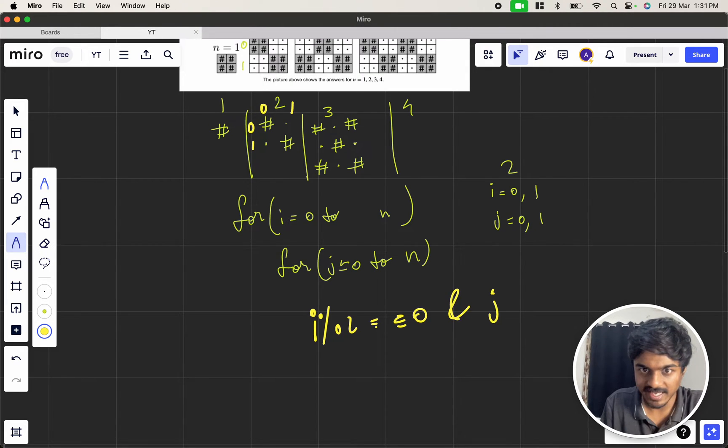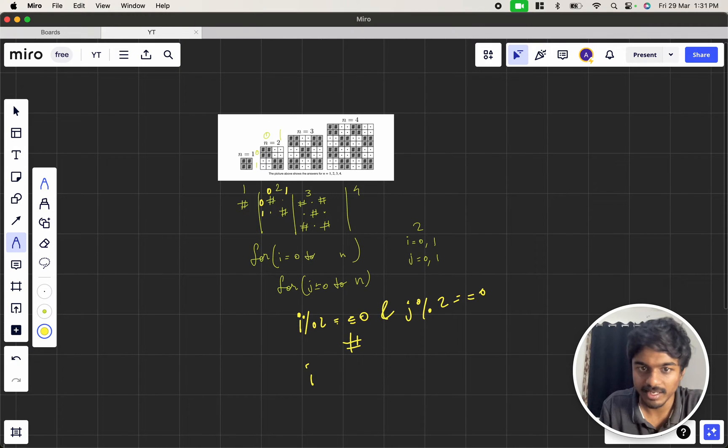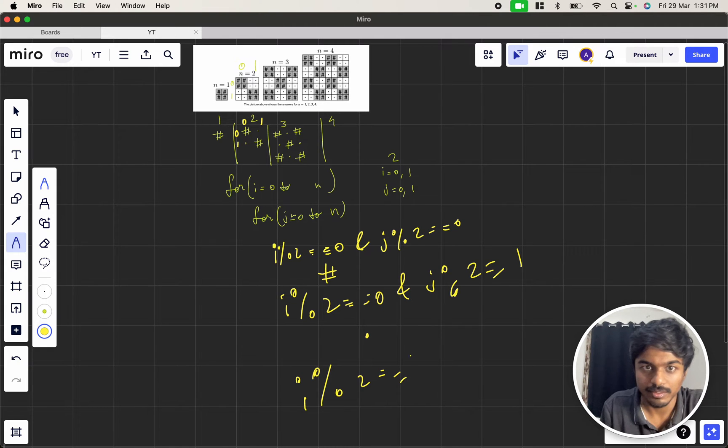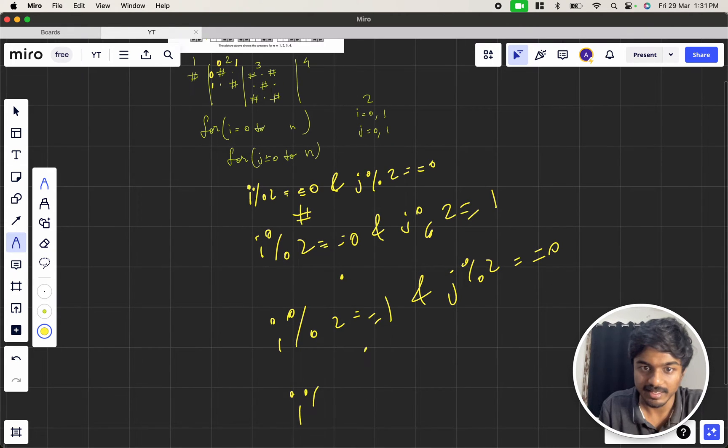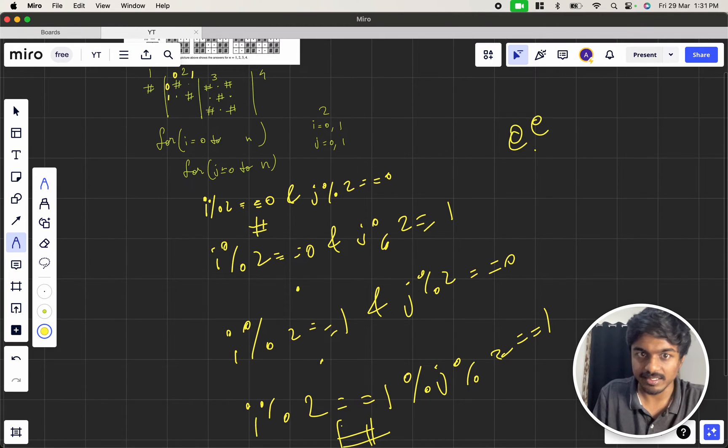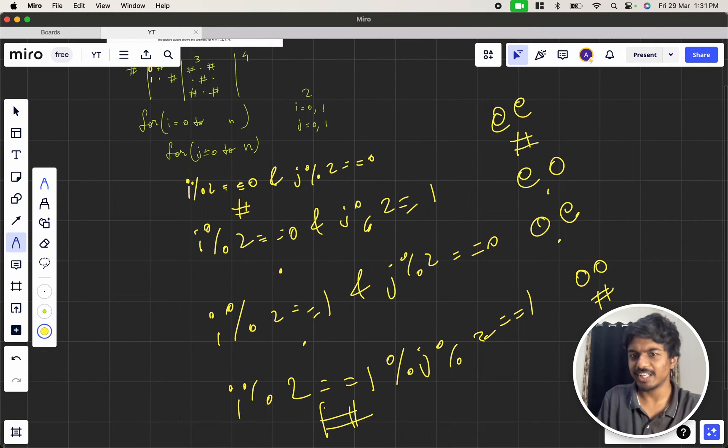even and j is also even, that is i is 0 and j is 0, we get a hash. It is alternating. If i is even and j is odd, we get a dot. If i is odd and j is even, it's dot. And if i is odd and j is odd, it is hash. So if even-even it is hash, even-odd it is dot, odd-even it is dot, odd-odd it is hash. Can I simplify this further?